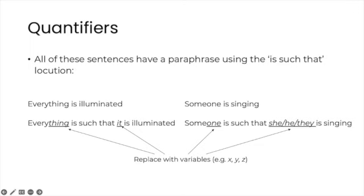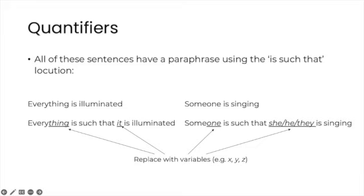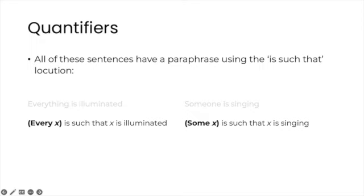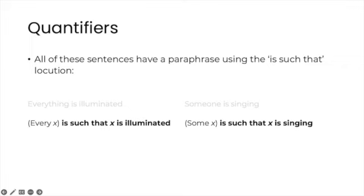Still further from everyday English, we can substitute the expressions I emphasize here, such as the pronouns and pronoun-like uses of words, by occurrences of variables. So everything is illuminated ends up as every x is such that x is illuminated. And someone is singing is rendered as some x is such that x is singing. We can identify two parts in the previous sentences. The first one consists in a quantifier, an expression like some or every, followed by a variable. The other is a long-winded version of a predicate that contains the expression is-such-that and the same variable that appears with a quantifier.